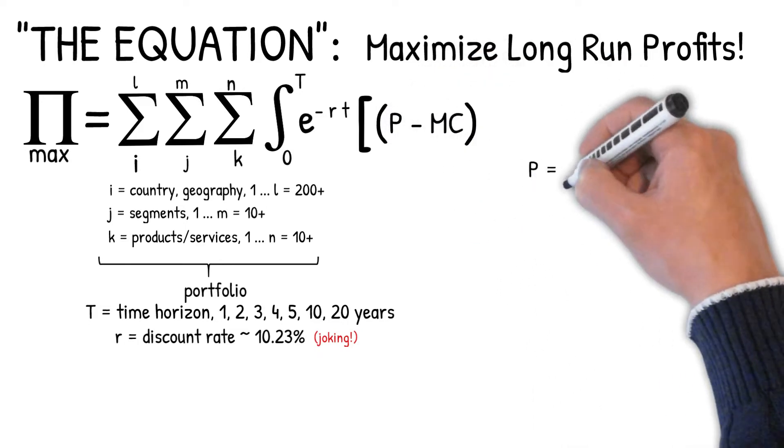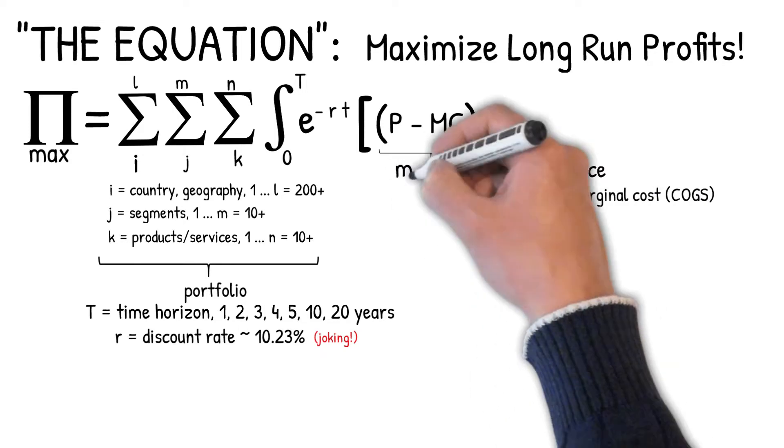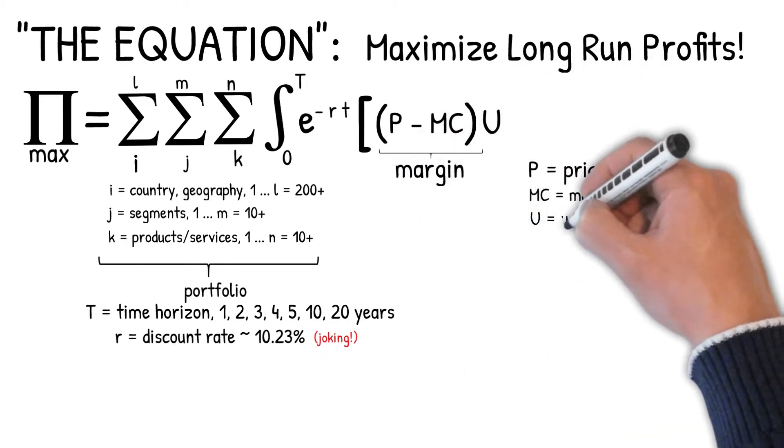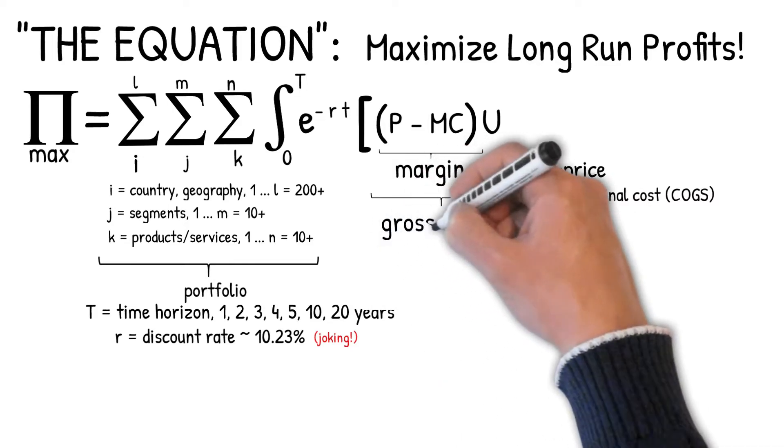For each product that we sell, there's going to be a price and we're going to subtract the marginal cost off of that price. That's called the margin. We're going to multiply that margin by the amount of units that we actually sell. And that's called the gross profit.